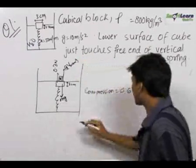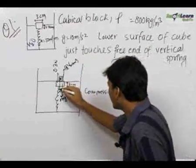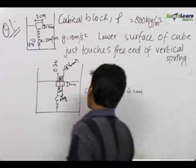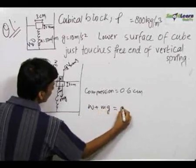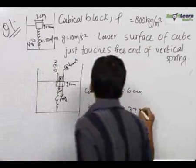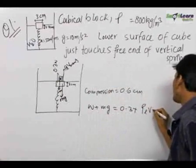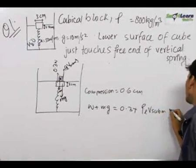Let us calculate the buoyant force first and the weight additional W. We can write this equation as W plus mg is equal to 0.3 plus rho liquid into V submerged into g.